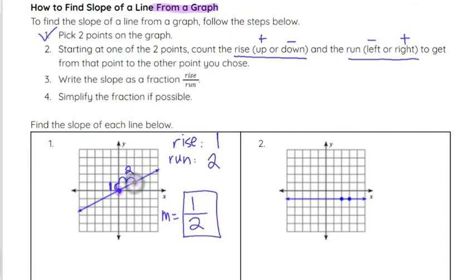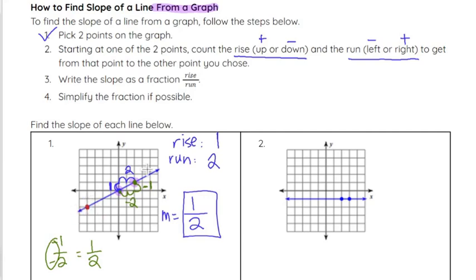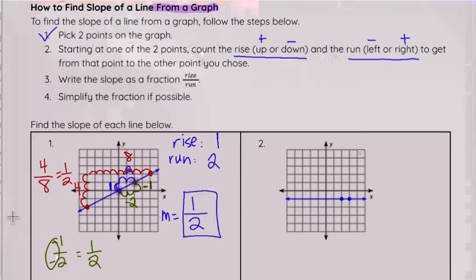If you had picked the other point, your rise would be going down one, which would be negative one, and your run would be left two, which would be negative two. Negative one over negative two still comes out to positive one half, because a negative divided by a negative is a positive. So even if you pick a different direction for your rise and run, you will still get the same answer. If I had picked points farther apart — rise four, run eight — four over eight still simplifies to one half. No matter which two points you pick on that line, they will simplify to the same fraction once simplified, as long as you write your rise over your run correctly.